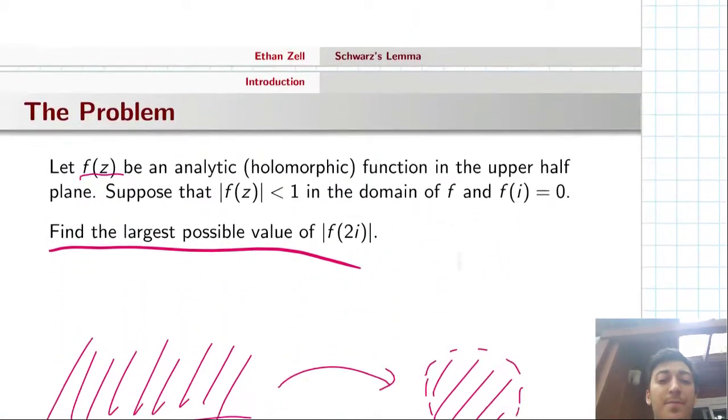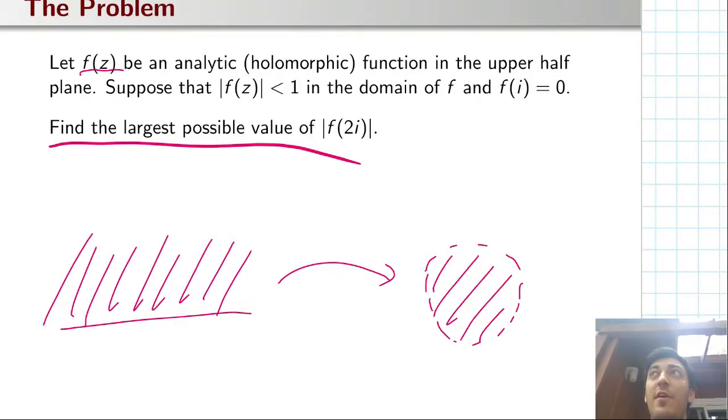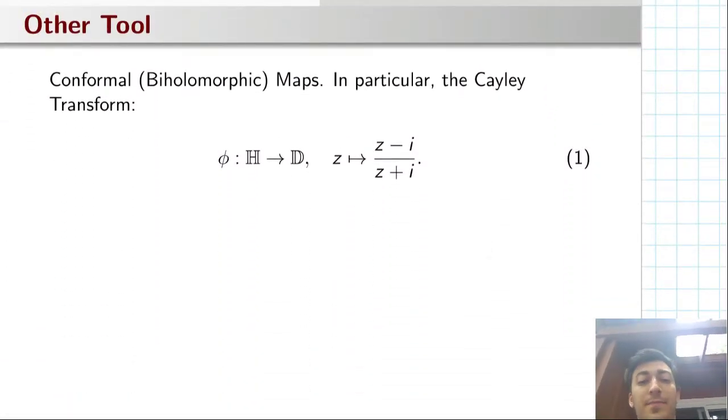But now our biggest issue is that f is a function in the upper half plane, not from the disk to itself. So in some way, we're going to have to create a function from the disk to itself, apply Schwarz's lemma, and then backtrack so that we can get something about f. The other thing we want to remember is that in complex analysis, we can always make things easier for ourselves by using these conformal or biholomorphic maps.